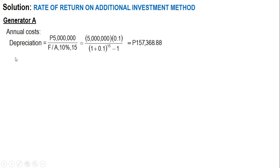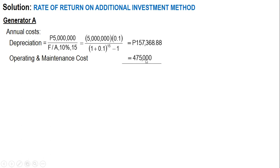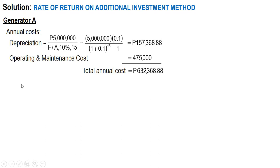The operating and maintenance cost for Generator A is given as 475,000 pesos. Adding this to the depreciation, the total annual cost for Generator A is 632,368.88 pesos.